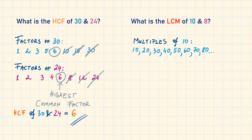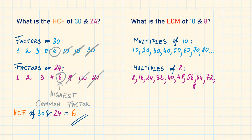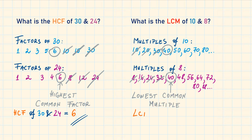The multiples of 8 are: 8, 16, 24, 32, 40, 48, 56, 64 and so on. We're going to choose the first number that is the same in both lists. So the lowest common multiple of 10 and 8 is equal to 40.